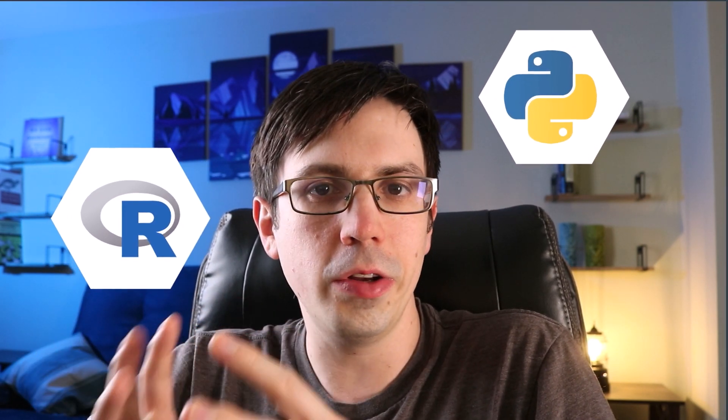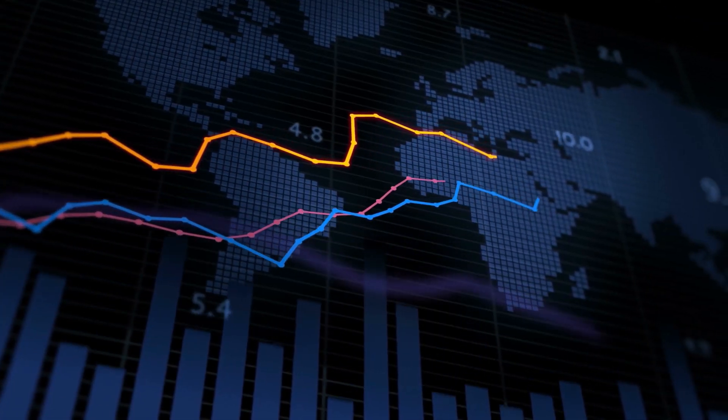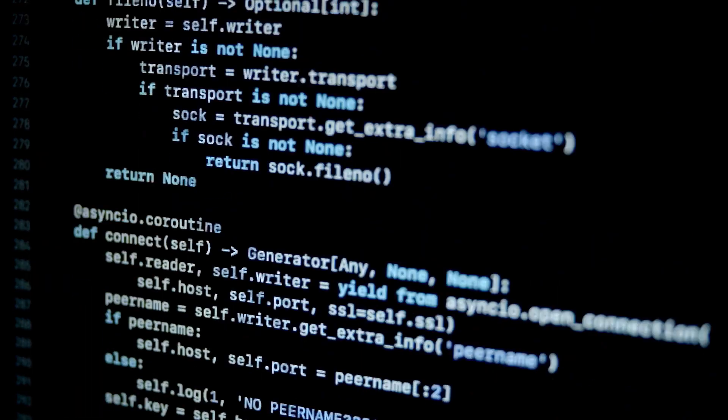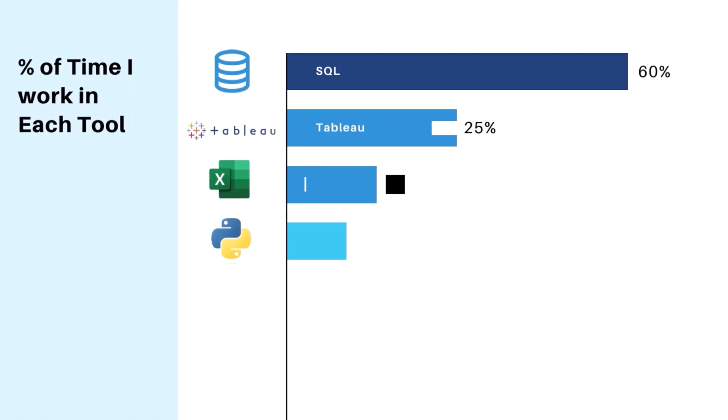Now, you might be thinking: what about R? What about Python? Well, here's the thing about these programming languages — these tools are great for doing a wide variety of things, like doing advanced data visualization that you couldn't do in Tableau or Power BI, doing predictive analytics, or automating certain processes. But in my eight years being a data analyst in healthcare, I don't really use Python or R very often. When I'm not in meetings, I'll probably spend 60% of my time in SQL, 25% of my time in Tableau, 10% of my time in Excel, and maybe 5% of my time in Python — and that's a really generous estimate.